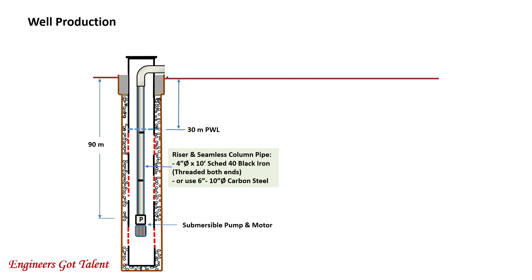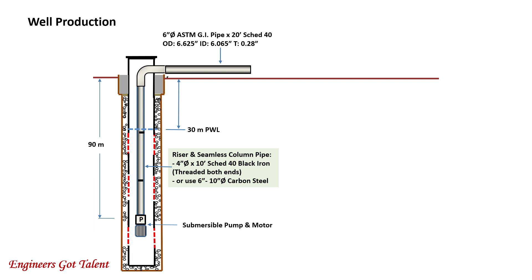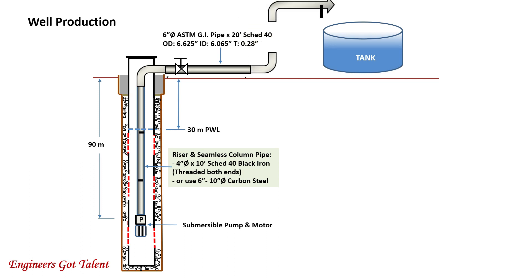Well production is the well's ability to produce water using a submersible pump and motor. This uses a standard production riser pipe. The submersible pump and motor is installed below the production riser pipe. The production water level is found to be at 30 meters below surface. A standard 6-inch diameter ASTM GI pipe by 20-foot schedule 40 is installed together with a control valve. In actual installation, this well is required to deliver water into a water tank or reservoir with a tank inlet located 20 meters above ground. We need to find out how many horsepower the pump requires to deliver water into the tank.